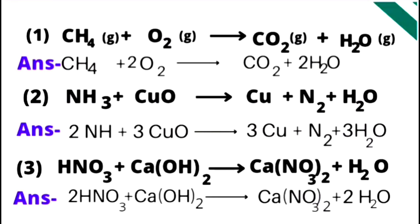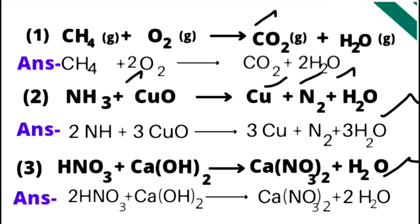Kuch unbalanced equations di gayi hain jinko balance karke dikhaya gaya hai. Sabse pehle reaction hai: CH4 plus O2 → CO2 plus H2O. Left hand side mein carbon ke one atom hain, CO2 mein bhi one atom hai. Hydrogen ke four atoms hain left side par, lekin right side mein sirf two atom hain. Hydrogen ke four atoms banane ke liye H2O ko 2 se multiply karna hoga. Iske baad oxygen balance karne ke liye left hand side mein O2 ko 2 se multiply kiya gaya, jisse left hand side aur right hand side equal ho jaate hain.